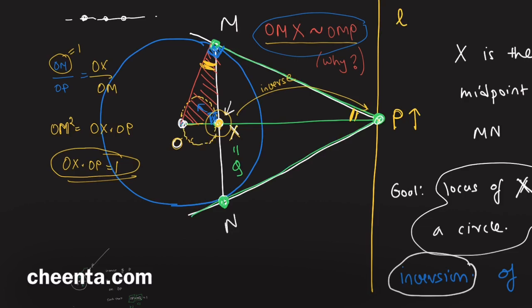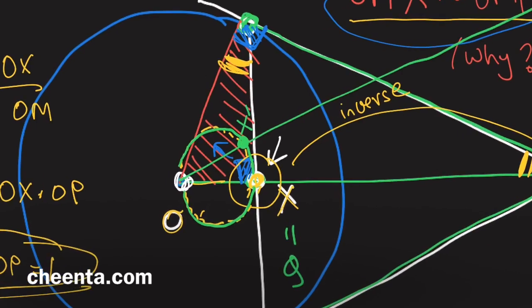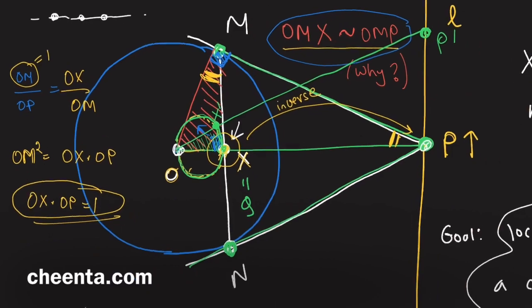Now, we wanted to show the locus of X is a circle. We can visualize it — taking another point P prime gives a corresponding point X prime, and any three non-collinear points define a circle. So this circle is the locus of X. Try to write a full proof in the comment section.